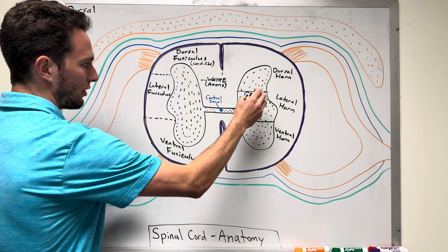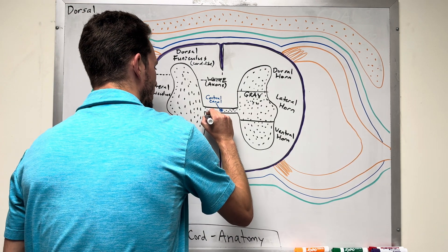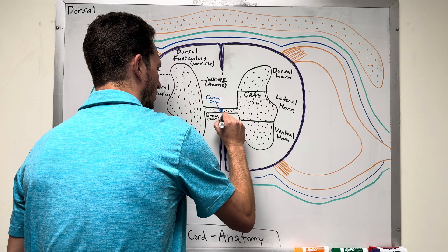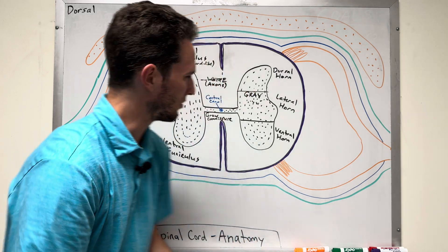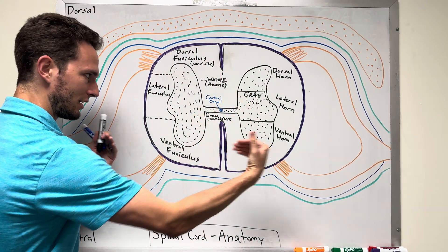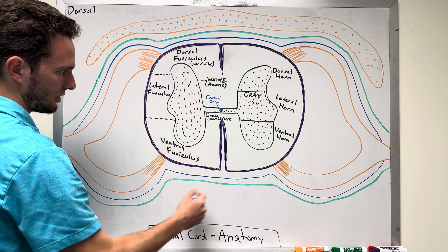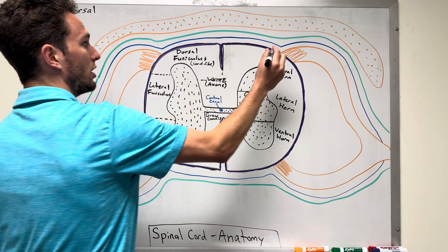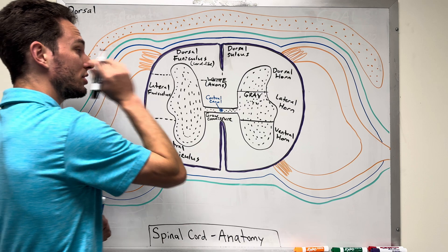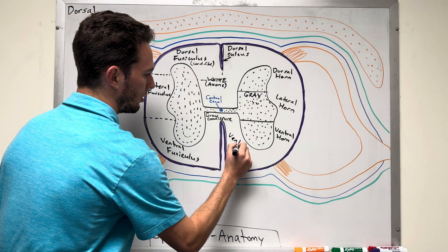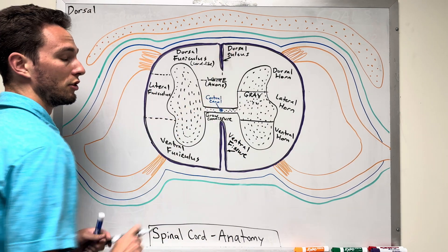We have equal and opposite gray and white matter on both sides, connected by the gray commissure — named because commissure means coming together and combining. Working outward, we see two involutions of the spinal cord: the dorsal sulcus, meaning a small inward depression in the back, and the ventral fissure in the front, which is a very large involution.